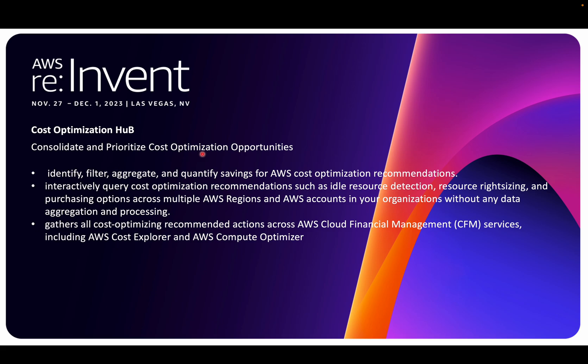Cost Optimization Hub helps you consolidate and prioritize cost-optimizing opportunities. For example, if you're running 10 EC2 instances on Red Hat or CentOS boxes and Graviton is available, Cost Optimization Hub will help identify where you can save cost by moving those 10 instances to Graviton — getting 30 to 40 percent better performance at a cheaper cost — along with right-sizing recommendations.